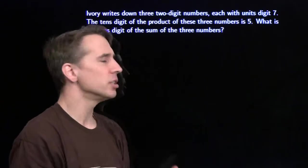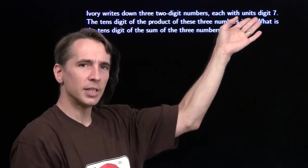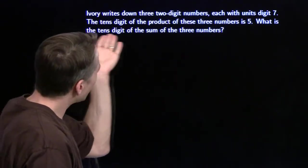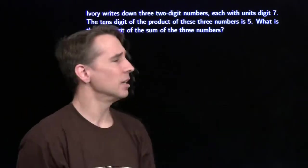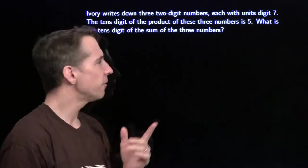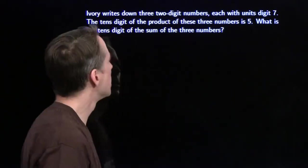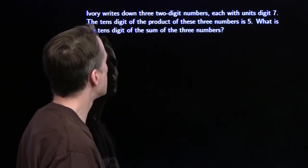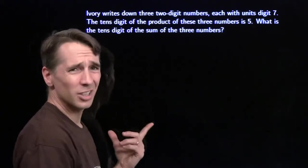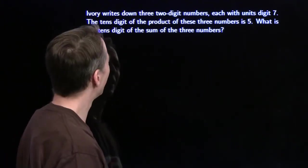Ivory writes down three two digit numbers. Each has units digit seven. Then the tens digit of the product of these three numbers is five. We have to figure out the tens digit of the sum of the three numbers. Well, you see a slick solution to this one? I don't.